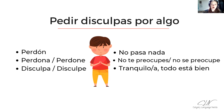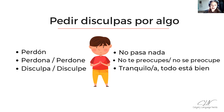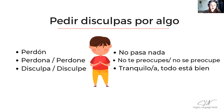Or for usted: no se preocupe. No se preocupe, señor González — don't worry. O por ejemplo: tranquilo o tranquila, todo está bien. Tranquilo for the guy, tranquila for the girl — masculine and feminine. Tranquilo, todo está bien — keep calm, everything is alright. Tranquila, todo está bien — keep calm, everything is alright. Por ejemplo: tranquilo, Pepe, todo está bien. Tranquila, María, todo está bien. Let's revise these three: no pasa nada; no te preocupes — tú; no se preocupe — usted; tranquilo o tranquila, todo está bien.